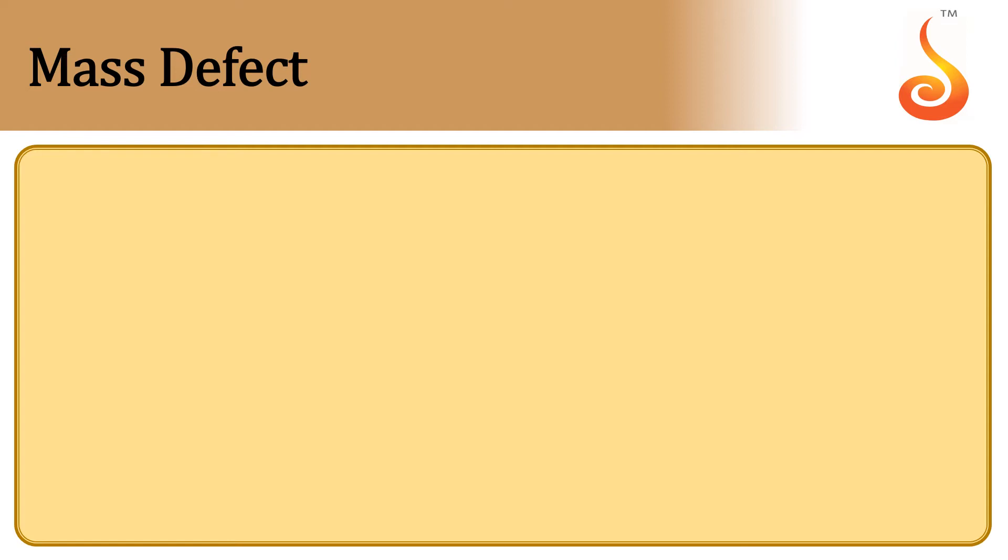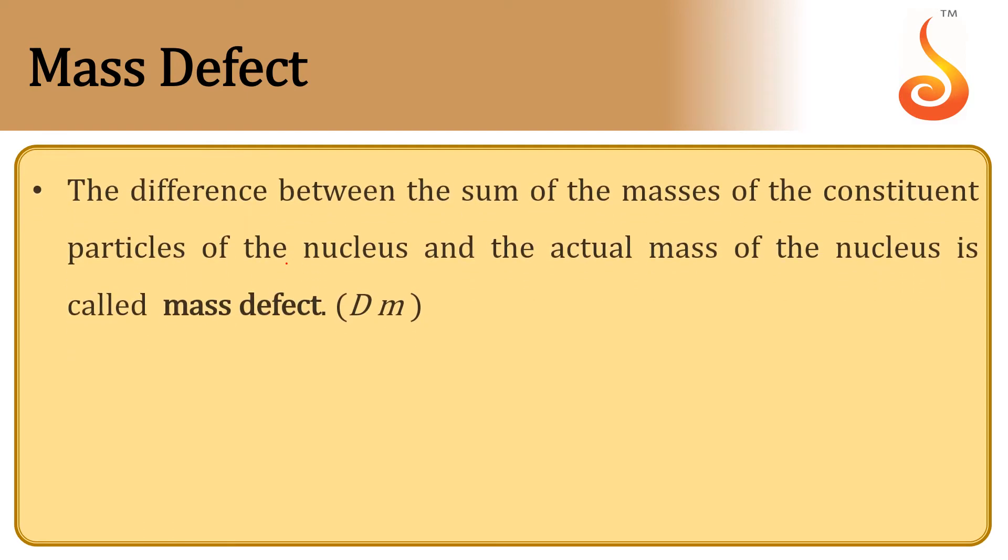The difference between the rest mass of nucleus and the sum of rest masses of constituent nucleons is called mass defect. In other words, the difference between sum of masses of the constituent particles of the nucleus and actual mass of the nucleus is called mass defect.